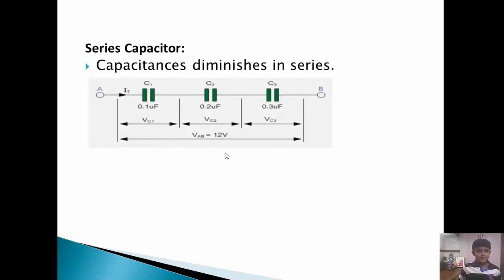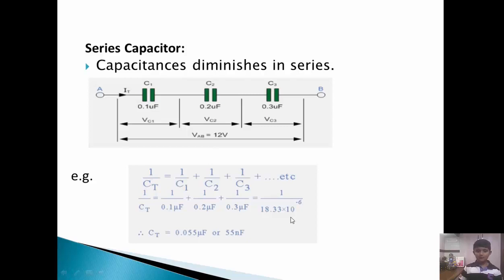The next is series capacitor. Capacitor diminishes in series. Example: 1 by CT equals 1 by 0.1 microfarad plus 1 by 0.2 microfarad plus 1 by 0.3 microfarad equals 1 by 18.33 into 10 to the power of minus. Therefore CT equals 0.055 microfarad or 55 nanofarad.